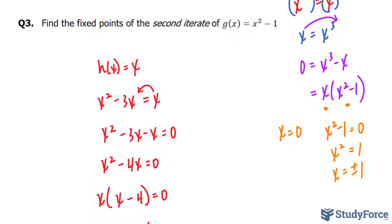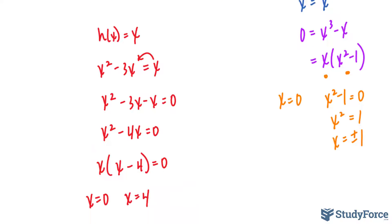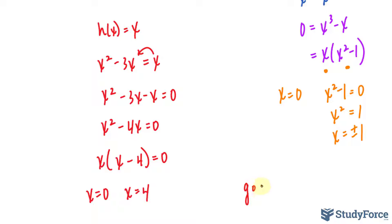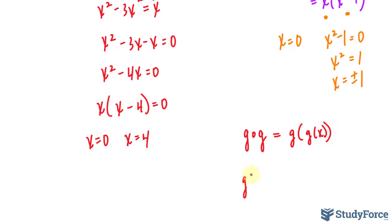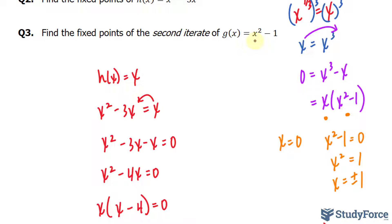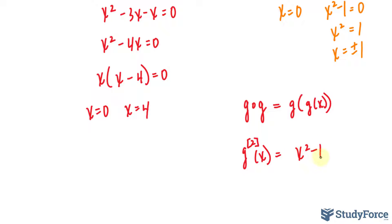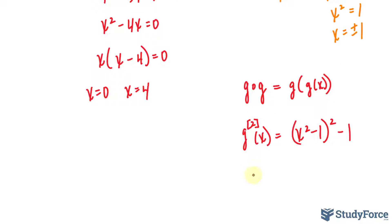In question three, we find the fixed points of the second iterate of g of x equals x squared minus 1. The second iterate is like saying g composed of g — this is a composite function, or g inserted into g. The second iterate of g, which I'll denote with a superscript 2 of x, is x squared minus 1 placed into itself: x squared minus 1, raised to the power of 2, minus 1.